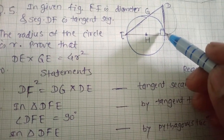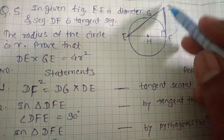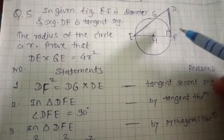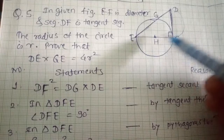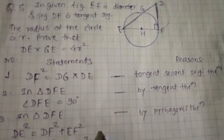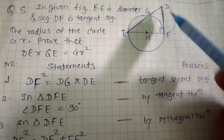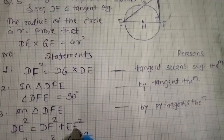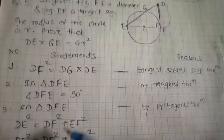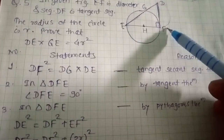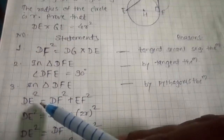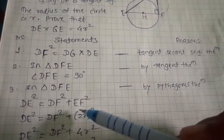Angle DFE is a right angle by the tangent theorem. So triangle DFE is a right-angled triangle. By the tangent-secant segment theorem: DF² = DG × DE. Applying Pythagoras theorem in triangle DFE: DE² = DF² + EF².